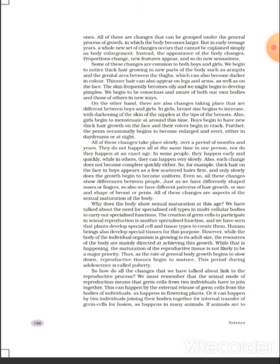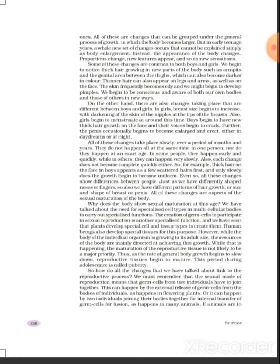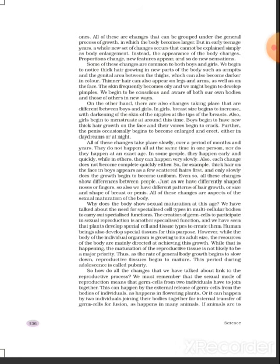For sexual reproduction to take place, like in flowering plants, both the male and the female have to release their germ cells, and for this they have to unite their bodies so that the transfer of male sperm can take place in the female body, and then the fusion of the germ cells can take place.